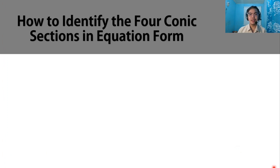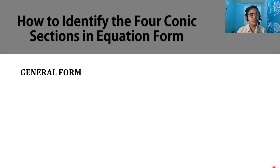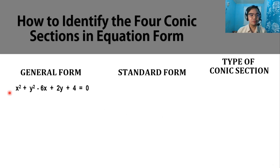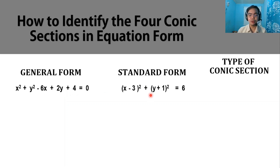In this video, we're going to be discussing how to identify the four conic sections in standard form. The first general form is x squared plus y squared minus 6x plus 2y plus 4 equals 0. Transforming this into standard form, we have quantity x minus 3 squared plus quantity y plus 1 squared equals 6. This standard form is a circle.